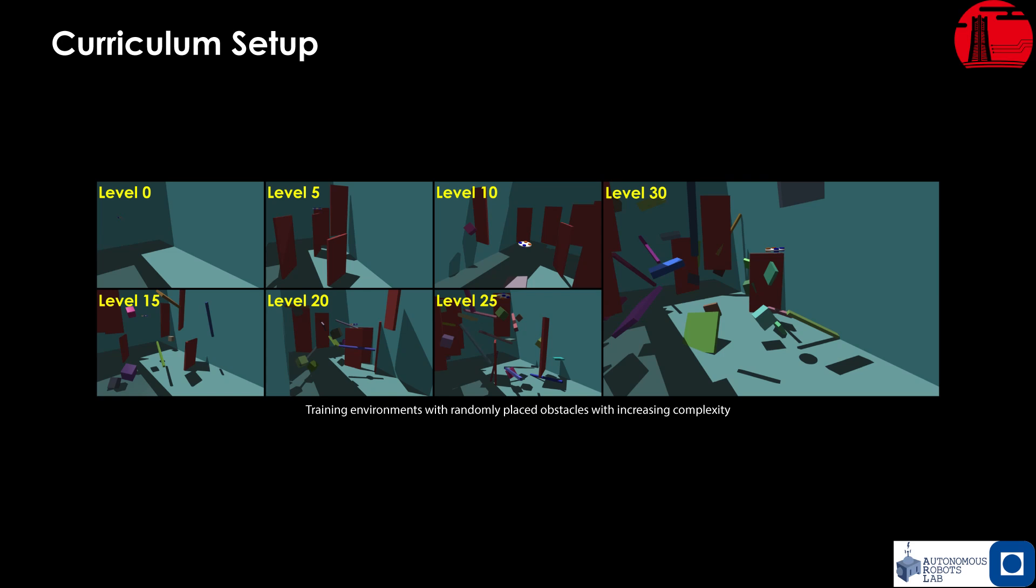To gradually increase the complexity of the environments the policy can navigate, a curriculum-based approach is used. The number of obstacles in the environment is increased as the success rate of the robot reaches a certain value for each curriculum level.